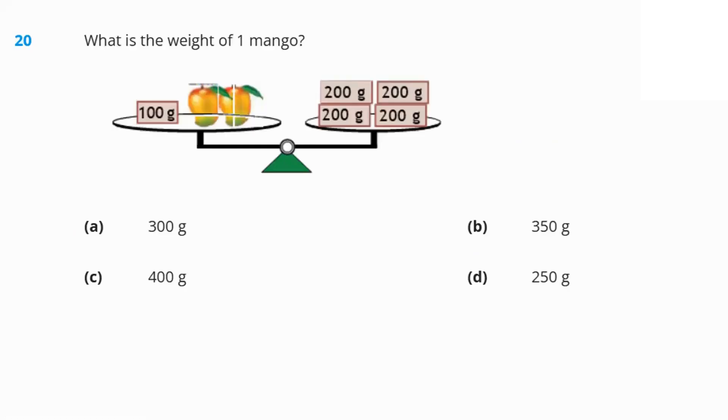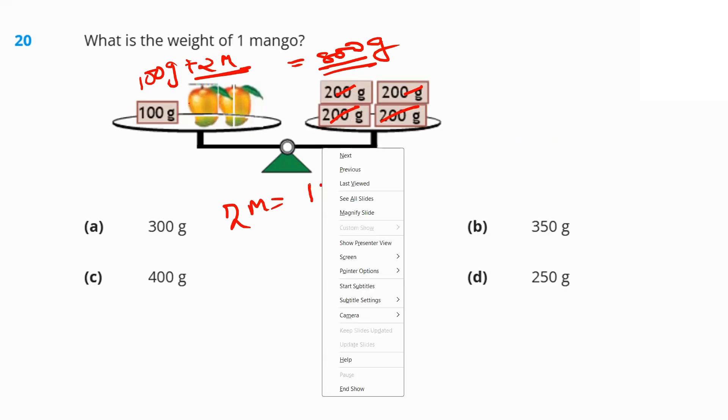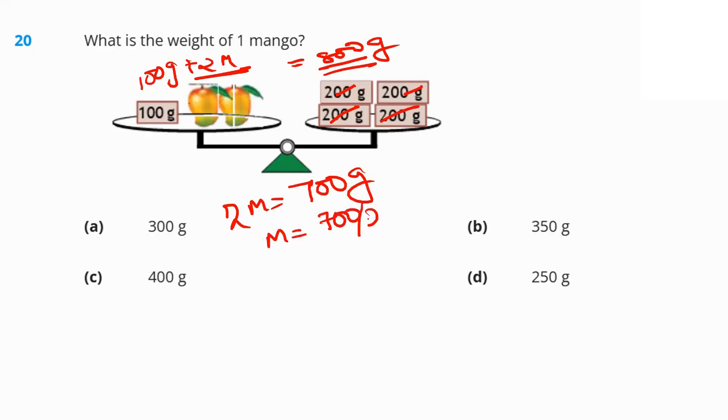Next question. What is the weight of one mango? What does the picture show? 100 grams plus two mangoes equals to 800 grams. 100 grams plus two mangoes is 800 grams. That means for two mangoes, 100 deducted from 800. That's 700 grams. If two mangoes is 700 grams, one mango is half of 700. That's 350. Option B.